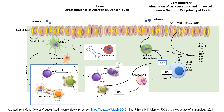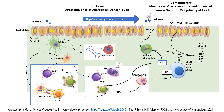When the epithelium — which in this case I'm showing as the skin, but it could be the respiratory tract or the GI tract — whenever the allergen is in contact with the epithelium, eventually there's damage. And sometimes there is an IgE, which is what we consider an atopic response when there is a specific IgE to that allergen.